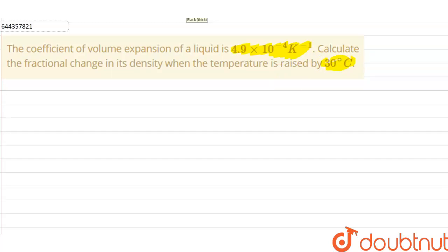We have been given in the question that the coefficient of volume expansion of a liquid as 4.9×10^-4 per Kelvin. We have to calculate the fractional change in its density when the temperature of the liquid is raised by 30 degree Celsius.